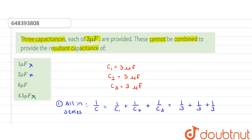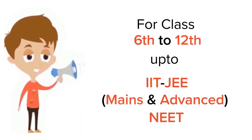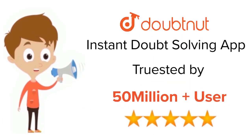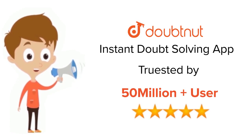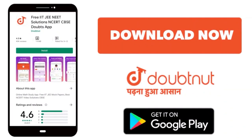So the only option remaining is 6 microfarad. This is our required answer — C1, C2, and C3 cannot be combined to give a resultant capacitance of 6 microfarad. Thank you. For class 6 to 12th, IIT-JEE and NEET level — trusted by more than 5 crore students. Download the Doubtnut app today.